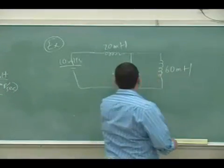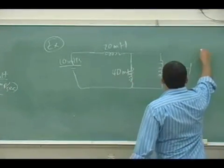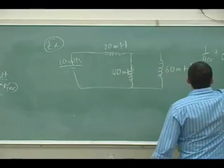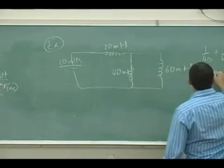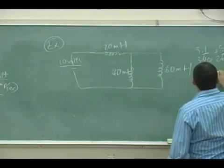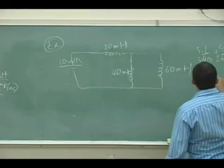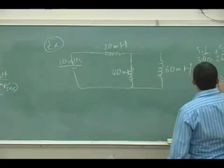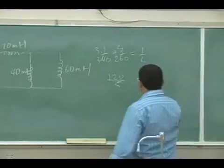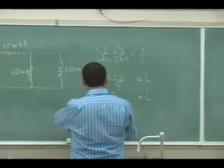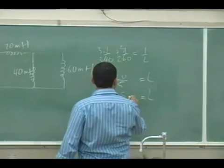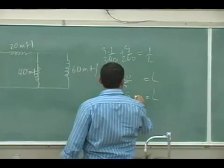So 1 over L total equals 1 over 20 plus 1 over 40, which is... No, 24 millihenries.